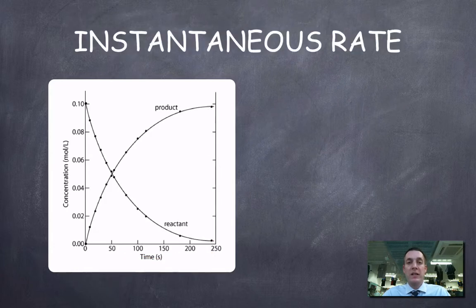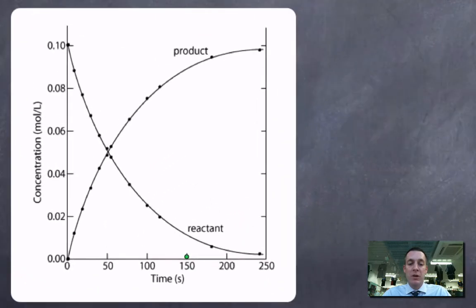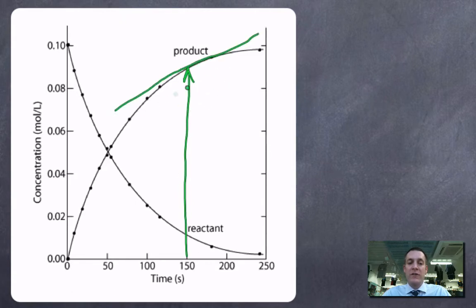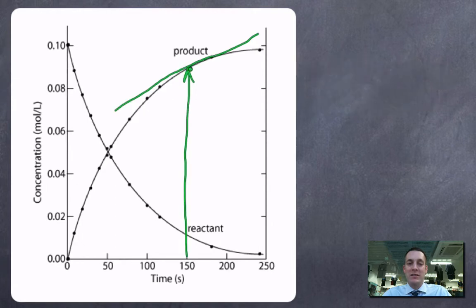If, however, we wanted to find an instantaneous rate, then what we would need to do here is to find the rate at any particular instant in time. For example, I might be asked to find the instantaneous rate after 150 seconds, and to do that I need to now draw a tangent. That's not a very straight looking tangent, but it's supposed to be a straight line, and it's supposed to be a tangent to this curve at 150 seconds.